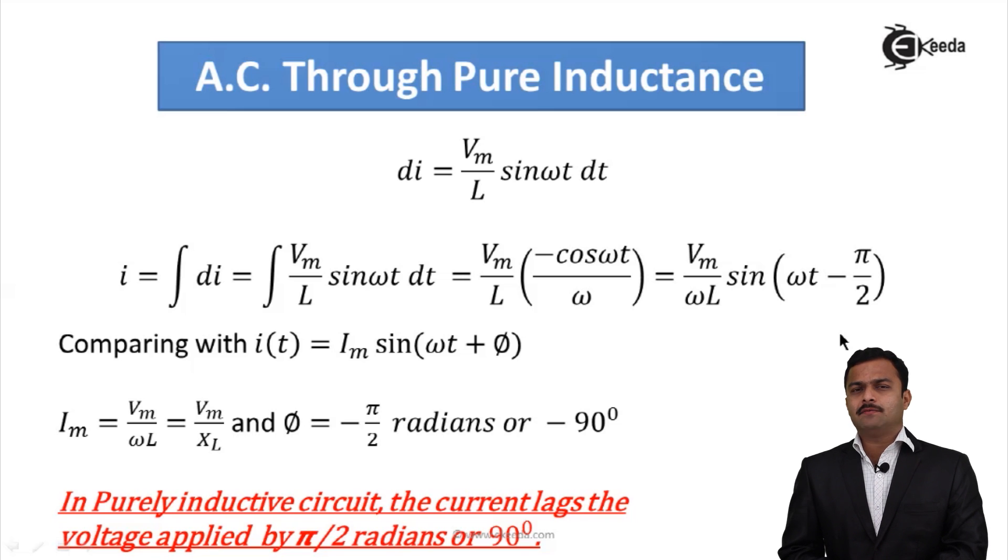Why I have done this? Because after comparing with the standard equation i(t) = Im sin(ωt + φ), I will get Im as Vm/ωL, which I can say Vm/XL. XL is nothing but inductive reactance. And φ, I will get as -π/2 radians or -90°.